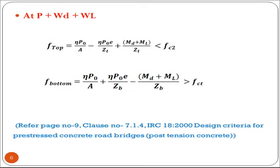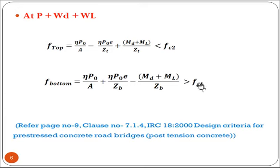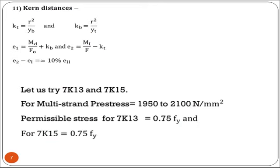Then, for prestressing force plus dead load and live load, we repeat the same procedure but account for losses. The actual prestressing force after losses is η × P0. Stress at top = η·P0/A − η·P0·e/ZT + (MD + ML)/ZT, which should be ≤ Fcp. Stress at bottom with the same adjustments should be greater than the permissible tensile stress Fcp (the negative permissible tensile stress in concrete). If satisfied, the section is safe against stresses.